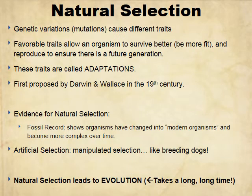Natural selection comes from genetic variations or mutations that cause different traits. Favorable traits allow an organism to survive and reproduce, ensuring a future generation — these traits are called adaptations. This was Darwin's work in the 19th century. Evidence for natural selection includes mostly fossil evidence; through the fossil record, we can see how organisms have changed over time. Natural selection should not be confused with artificial selection, which is manipulated, like breeding dogs.